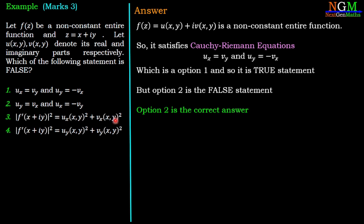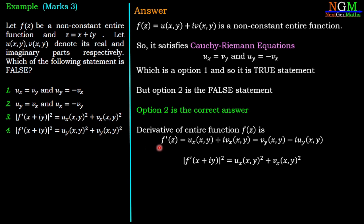Still we are going to check the other two options. The derivative of entire function f(z) is f' = u_x + iv_x or v_y - iu_y. Here we want the square of modulus of f'. So |f'|² = u_x² + v_x².